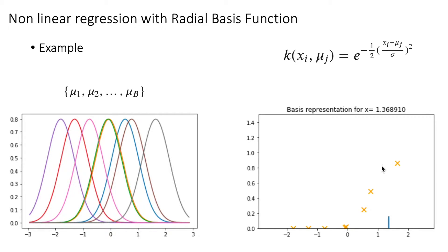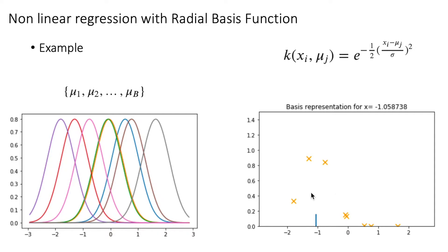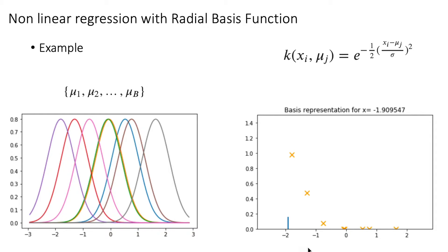So this is the new representation of our value x. Here's another example: if x is located in a certain position, the nearby Gaussians will have a higher value for that x. As we move to the right, the evaluation of x under those Gaussians starts decreasing. So for each x we get a different representation. At the end, we are transforming each value into a vector that depends on the evaluation of that value under all the basis functions.